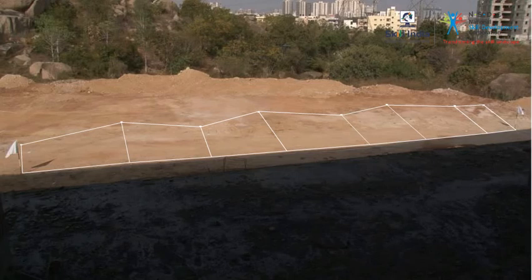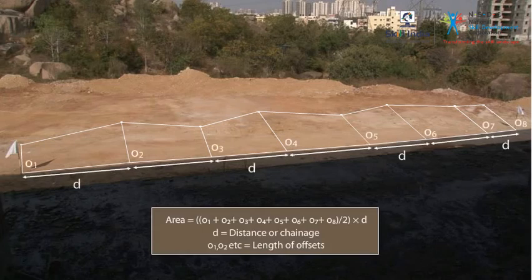Once you have the required number of offsets in the area, you can calculate the area with the formula: A is equal to the sum of all offset distances divided by the number of offsets, multiplied by D, where A is the area to be calculated and D is the distance or the chainage.